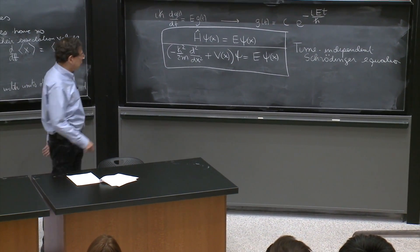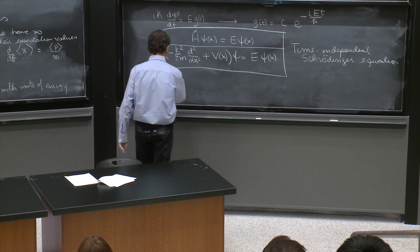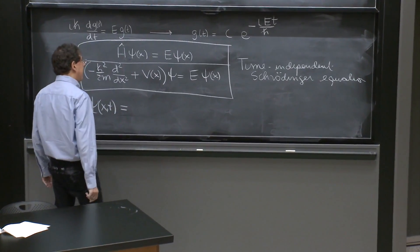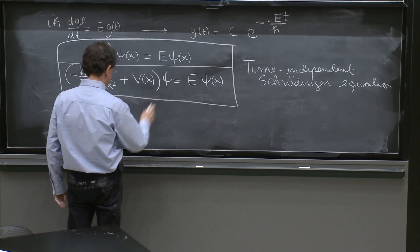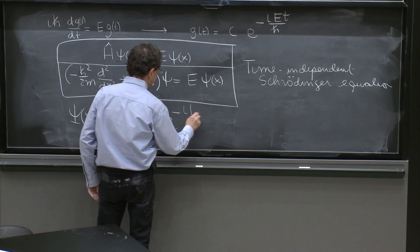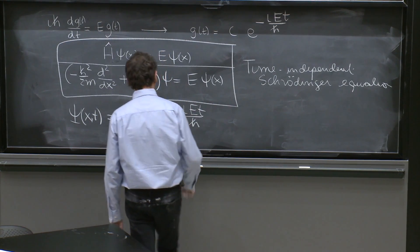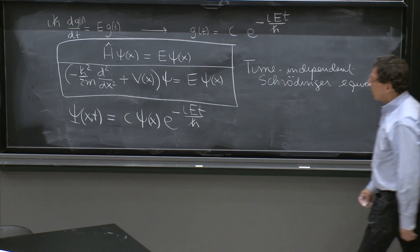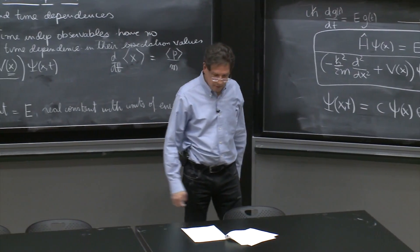Let me write the whole solution there. If you've solved these two things, the whole solution psi of x and t is now a constant times psi of x, times e to the minus iEt over h-bar, where this psi of x solves this equation. So, this is the stationary state.